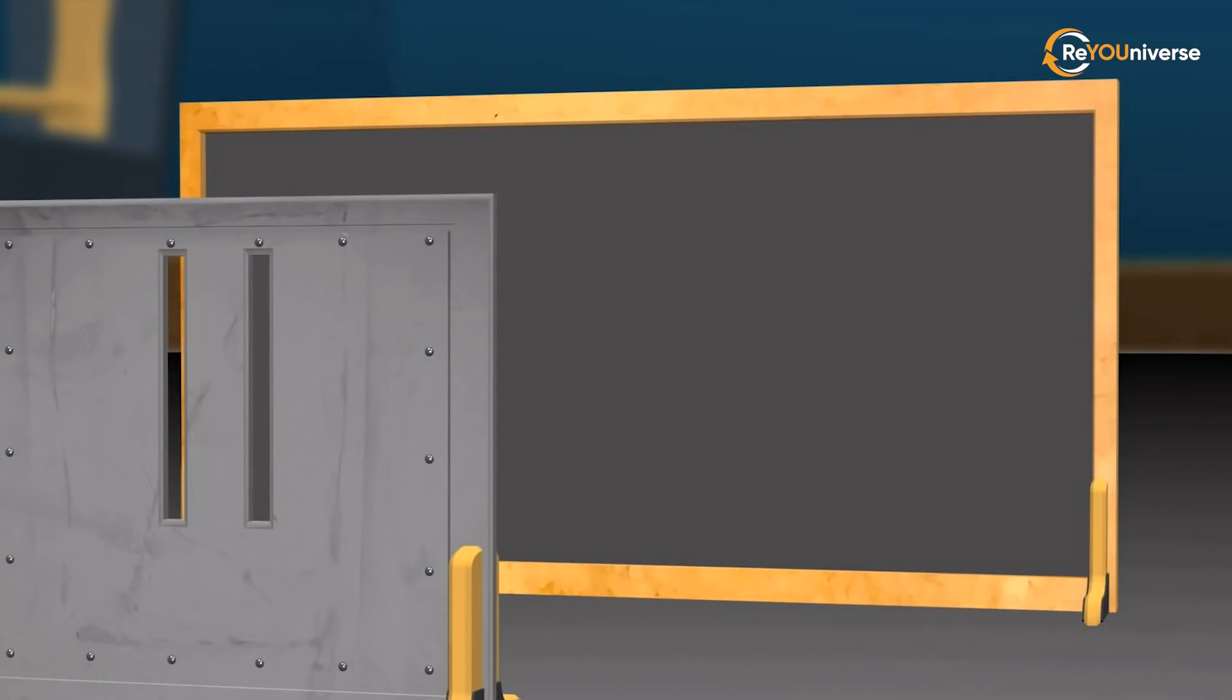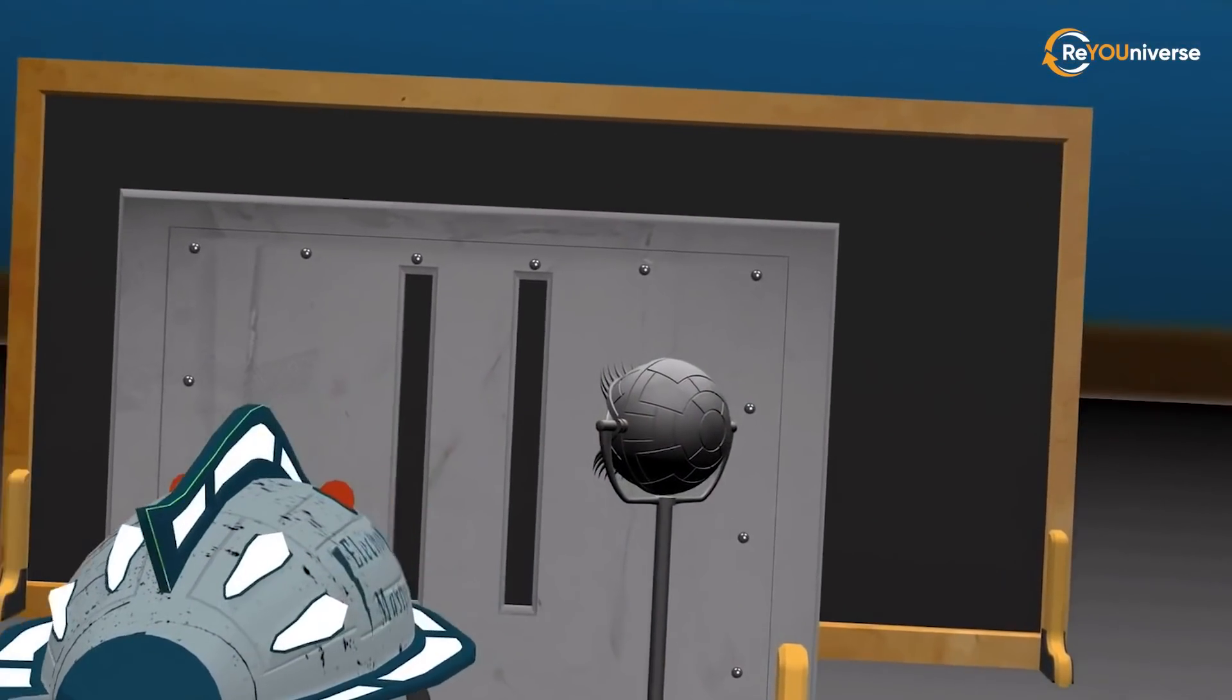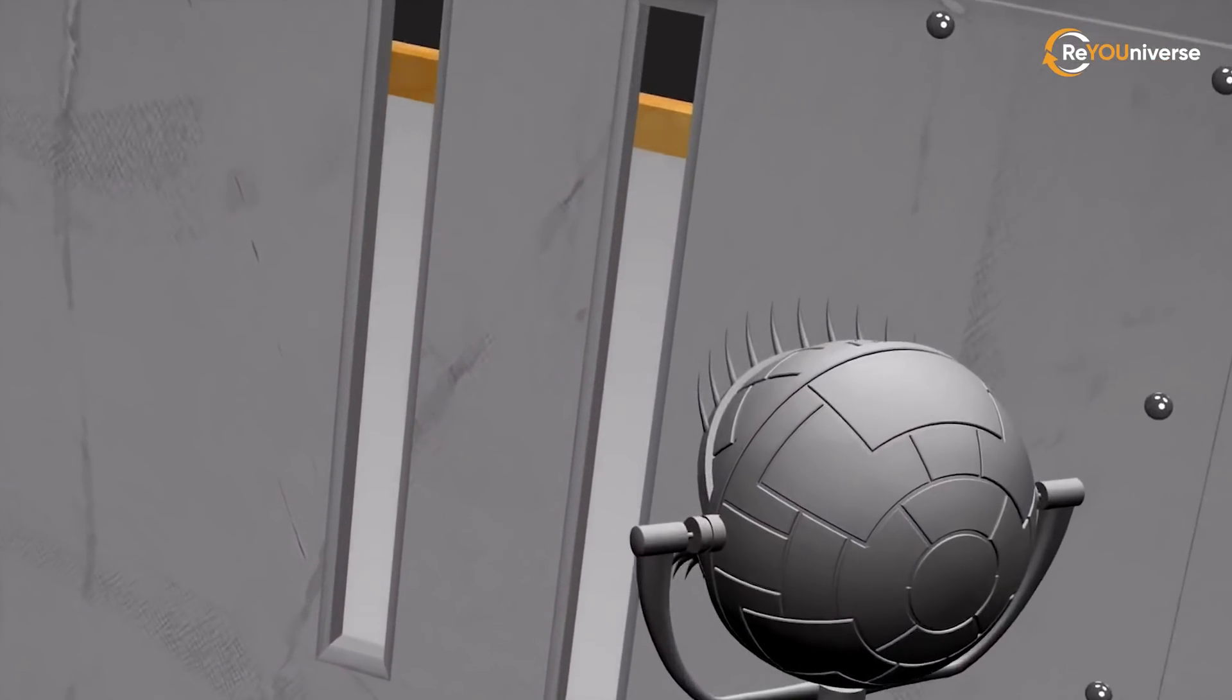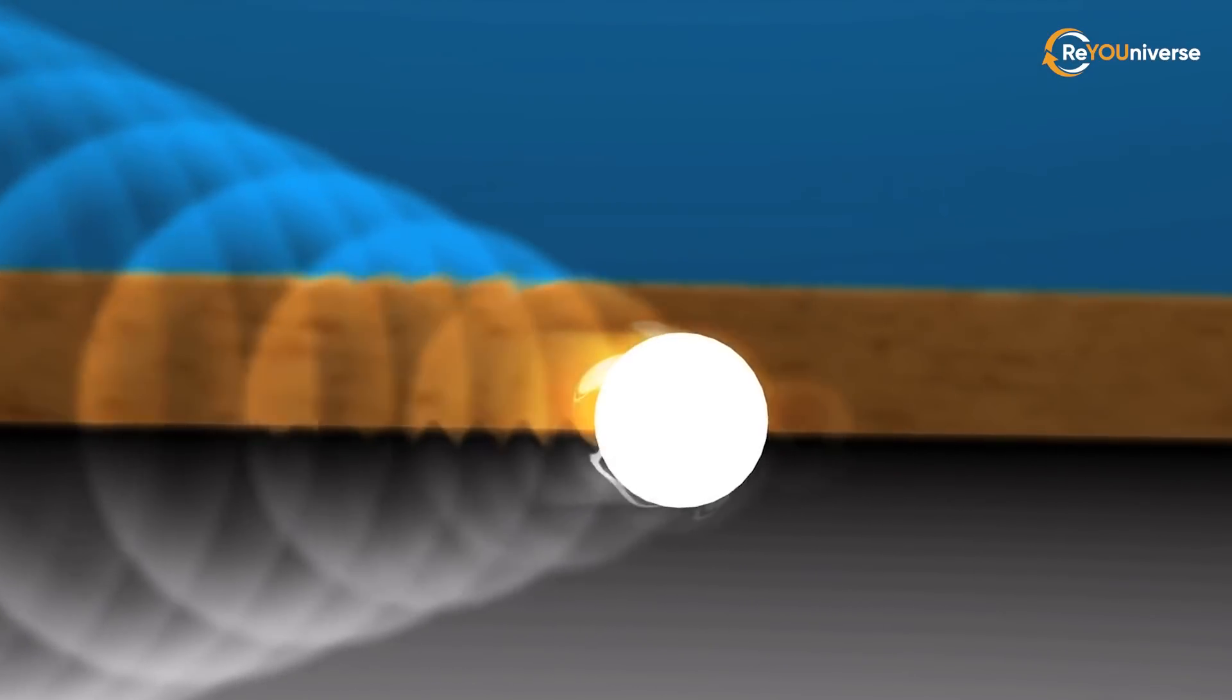Then, physicists decided to see through which of the slits the electron was passing. They put a measuring device near one of the slits to register the passing of the electron at that particular site. Then, something even more exciting happened.